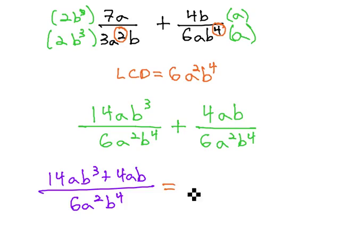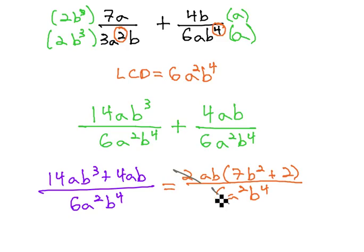We do like to check to see if they can factor to see if we can reduce. Notice the common factor of 2ab, leaving behind 7b squared plus 2 over 6a squared b to the fourth. 2 and 6 can reduce, leaving 3, and 1a and 1b dividing out, leaving a to the first and b cubed. So we have our final answer of 7b squared plus 2 over 3ab cubed.